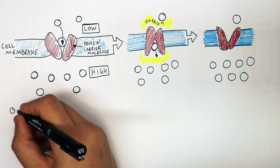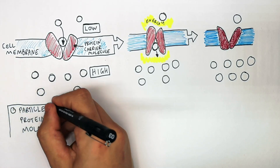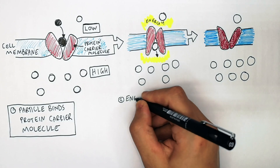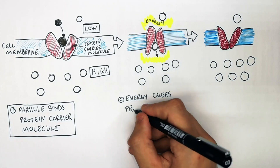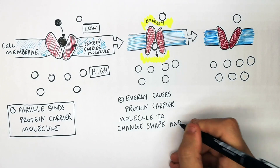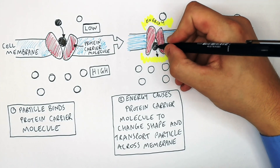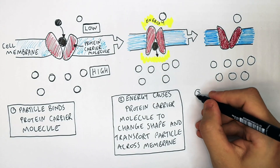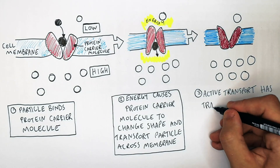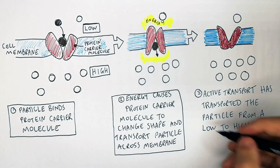Let's read through that one more time. Step one: the particle binds the protein carrier molecule. Step two: energy causes the protein carrier molecule to change shape and transport the particle across the membrane. Step three: active transport has now transported the particle from a low to high concentration.